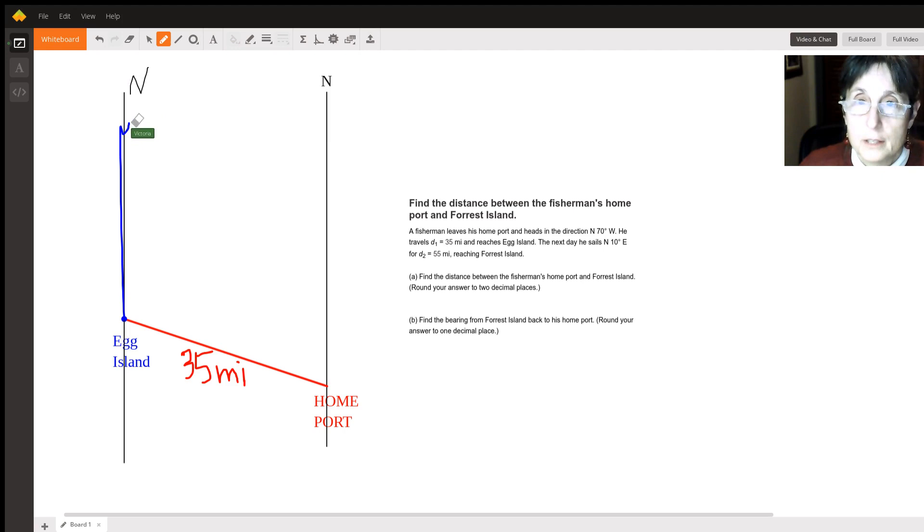I need a straight line. He starts from Egg Island pointing north and then he goes a little tiny small 10 degrees to the east. So this is 10 degrees.